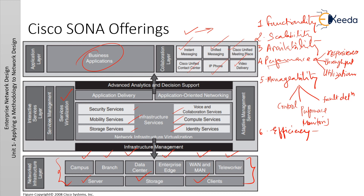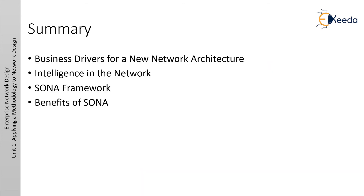The seventh benefit is security, which provides an efficient balance between usability and security while protecting information assets and infrastructure from inside and outside threats. With this, the topic is completed. In this lecture we have covered business drivers for a new network architecture, intelligence in the network, the SONA framework, and the benefits of SONA.